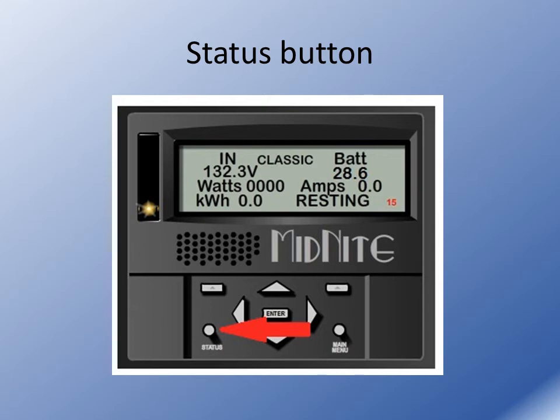Status button: the status button will take you back to the home screen as shown here at any given time from anywhere in the Classic's menus. It will also navigate you through several informational screens on the Classic, indicating different things — for example, firmware dates or power graphs. Just keep pushing the button, you'll navigate through those screens, and you'll always come back to this one.